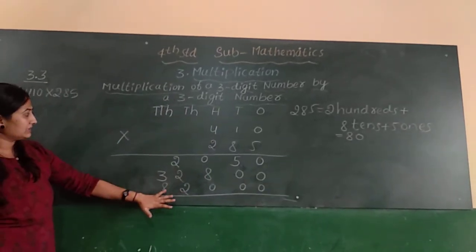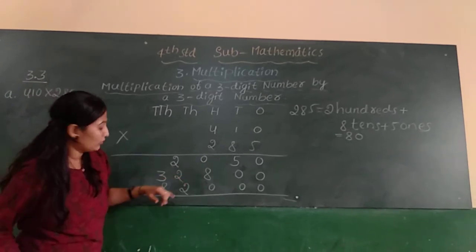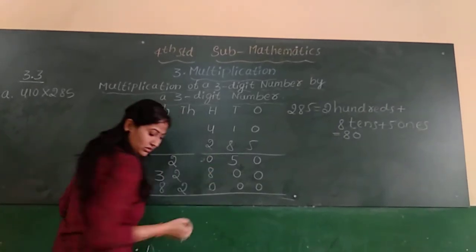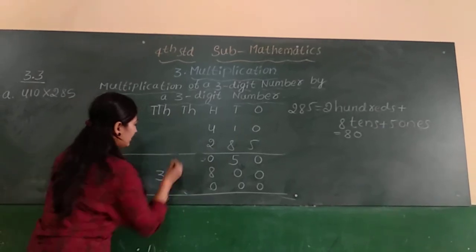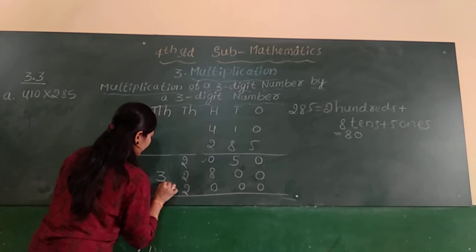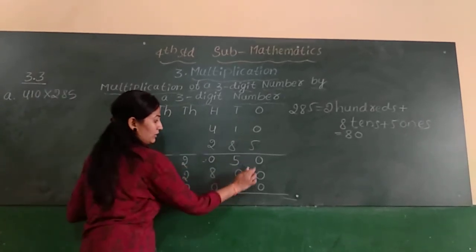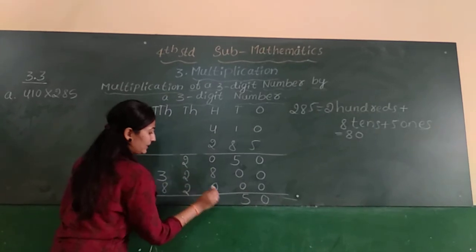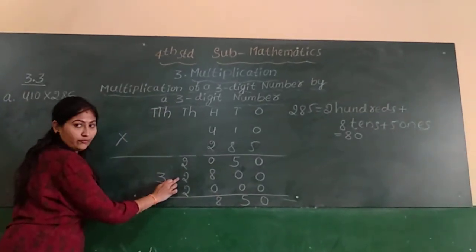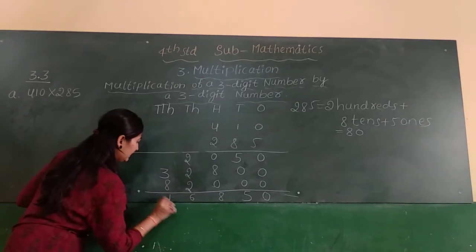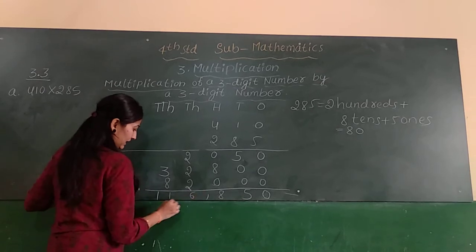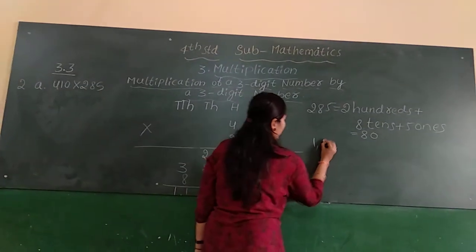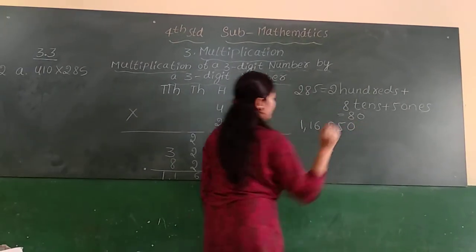Next we add all three. 0 plus 0 plus 0 is 0. 5 plus 0 plus 0 is 5. 0 plus 8 plus 0 is 8. 2 plus 2 is 4, 4 plus 2 is 6. Next 3 plus 8 is 11. What is the answer? 116,850. This is the product.